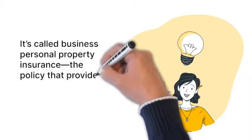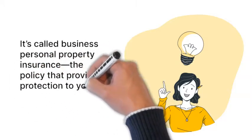It's called Business Personal Property Insurance, the policy that provides protection to your office equipment. Be it a stapler or an expensive rug at your office, the policy has you covered.